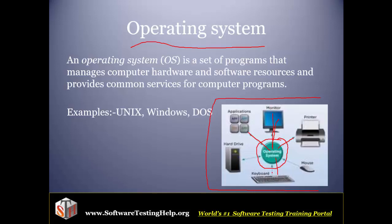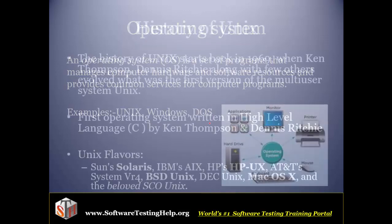The operating system decides what resources are needed to process those commands and programs — whether it has to go to the memory, logical unit, or other resources. It also decides if output has to go to the printer or if the program needs input from the keyboard. All of this is taken care of by the operating system. There are different operating systems available, like Unix, Windows, and DOS.